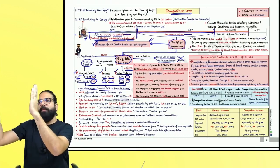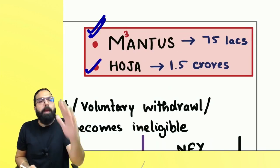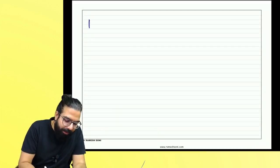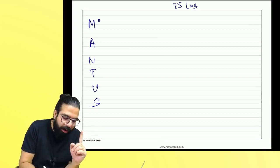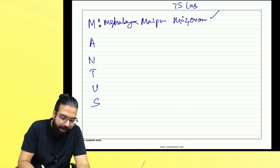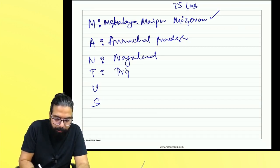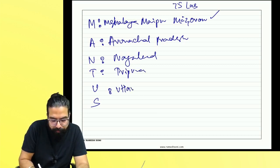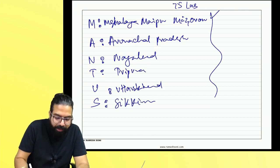The 1.5 crore limit and the 75 lakh limit — for whom is each applicable? Remember the acronym MANTUS: M for Meghalaya, Manipur; A for Arunachal Pradesh; N for Nagaland; T for Tripura; U for Uttarakhand; S for Sikkim — for all these states the limit is 75 lakh rupees.